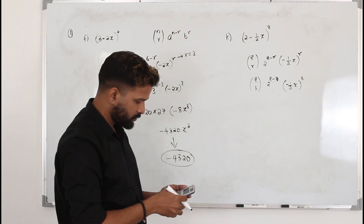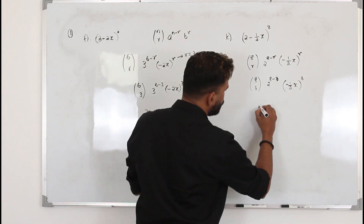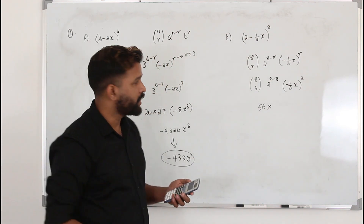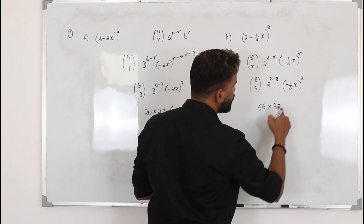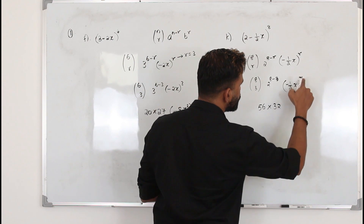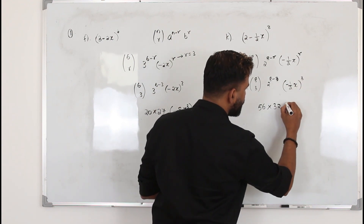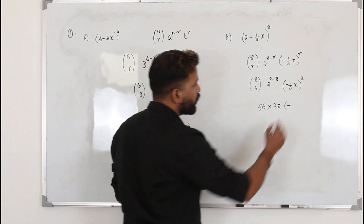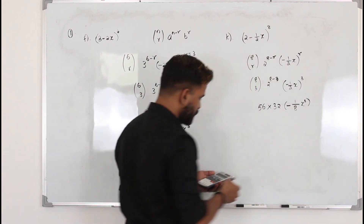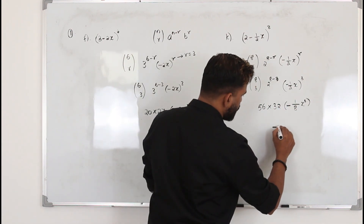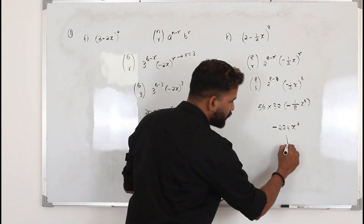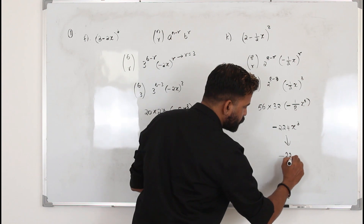Simplify: 8C3 is 56, times 2⁵ which is 32. Now cube each number and variable in (−½x)³: the negative stays, 1³ is 1, and 2³ is 8, giving −(1/8)x³. Combining everything: 56 × 32 × (−1/8) x³ = −224x³. The coefficient of x³ is −224.